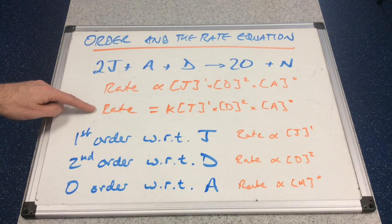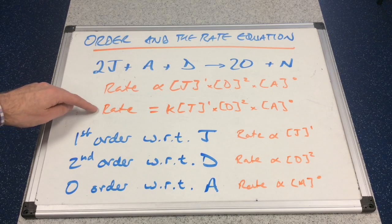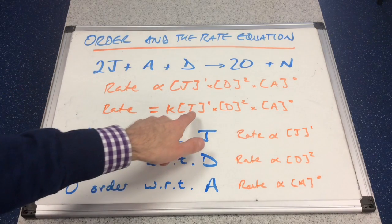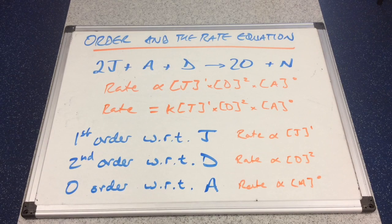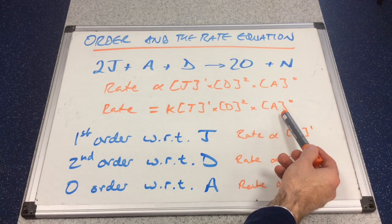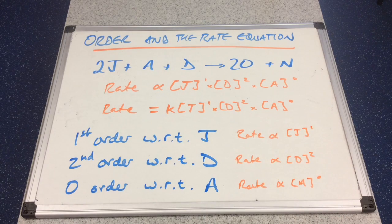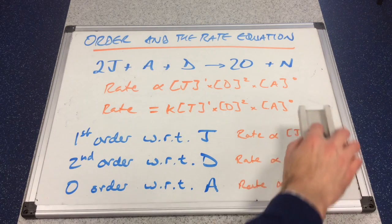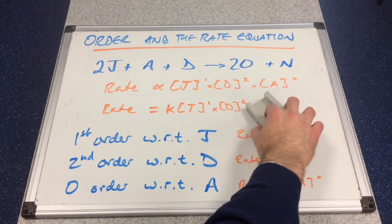So the rate equation for this reaction will be: rate equals K, times concentration of J to the power 1, times concentration of D to the power 2, times concentration of A to the power 0. Anything raised to the power 0 equals 1, so we can lose that from the equation.